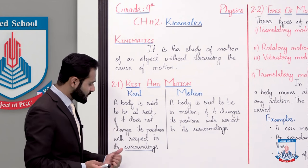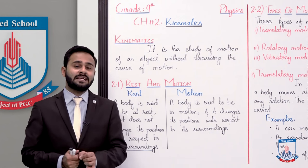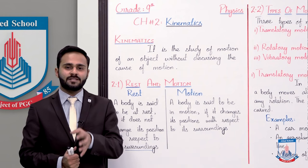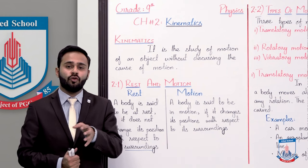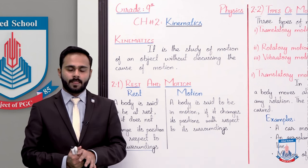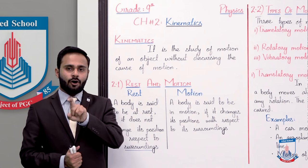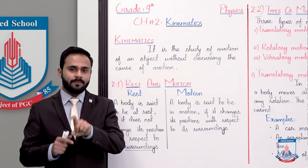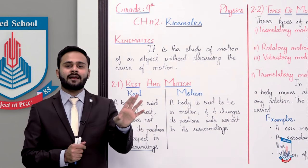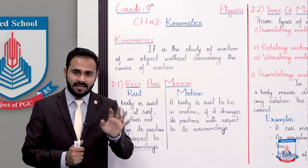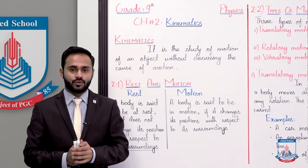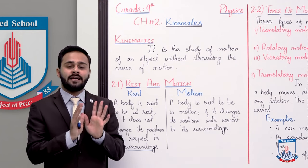Yahan pe jo cheez underline ki: that is 'with respect to its surroundings.' Surroundings basically bohot matter karti hain. Ek example discuss karte hain — ek bus mein kuch passengers baithe hain, woh bus move kar rahi hai. Let's suppose do passenger hain: A aur B. A ke according — A surroundings hai — toh passenger B move nahin kar rahi, woh apni position change nahin kar rahi, halanki bus chal rahi hai. Lekin woh passenger B move nahin kar rahi, so A ke according B rest mein hai.